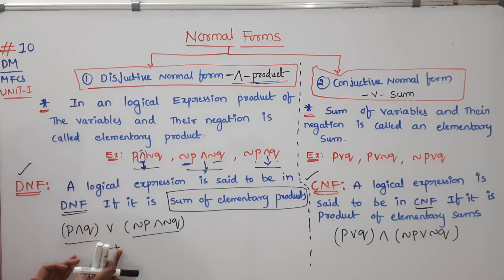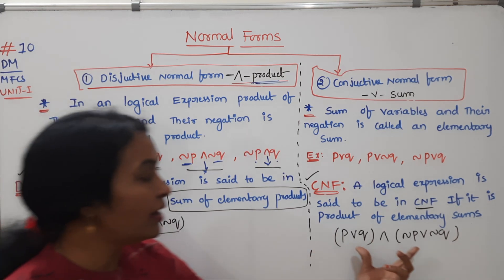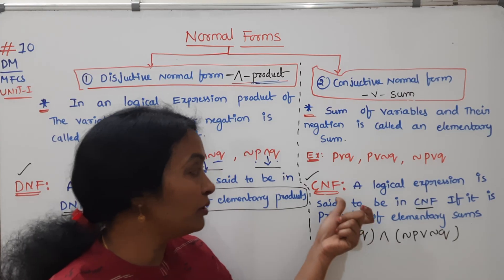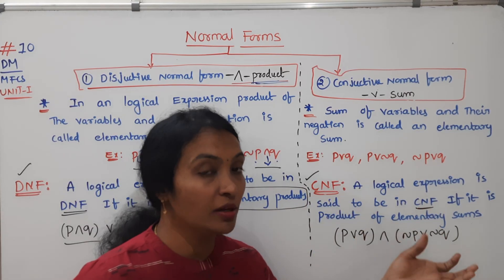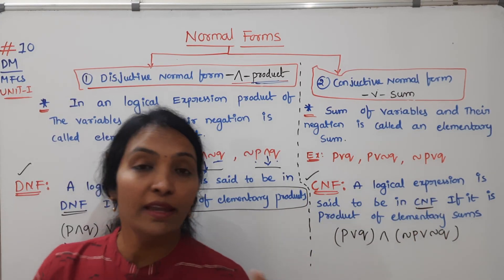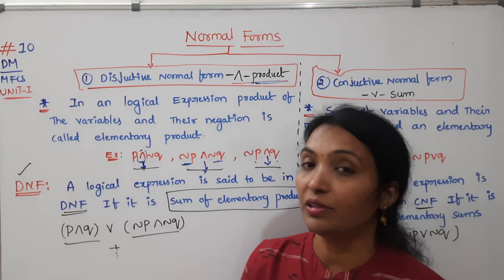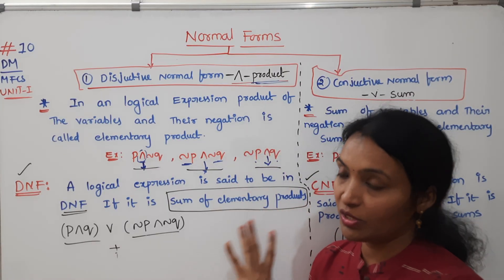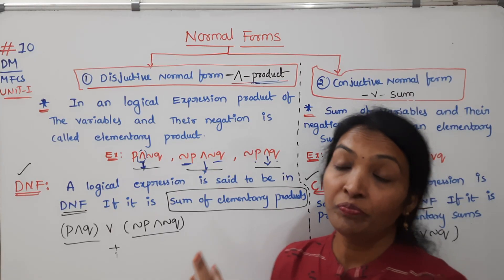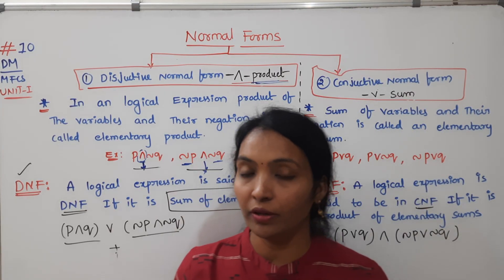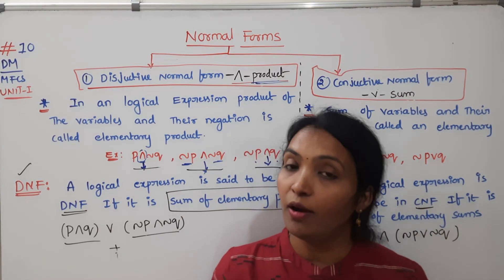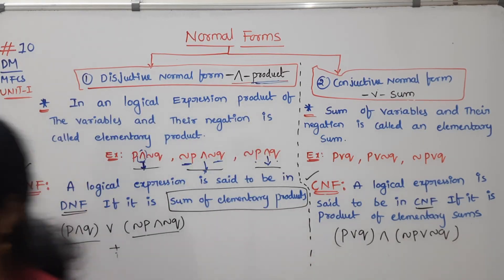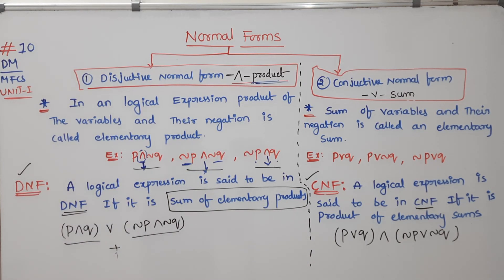Sum of elementary products is DNF, and product of elementary sums is CNF. If you look at these definitions, you have to practice the problems. Make sure you share the video. All the concepts of the first unit will be posted. All the important questions will also be posted. All the best for your exams. Thank you for watching.